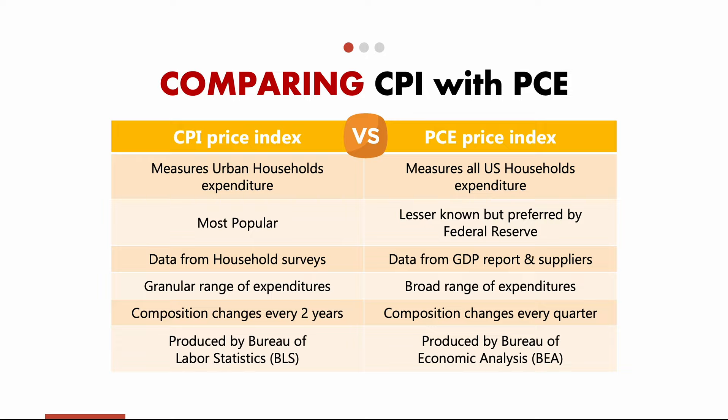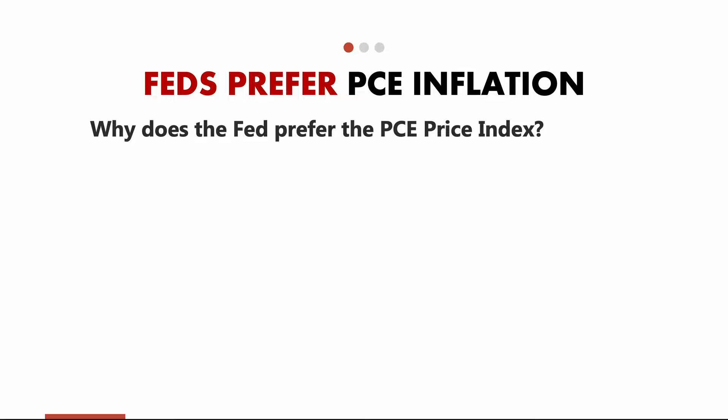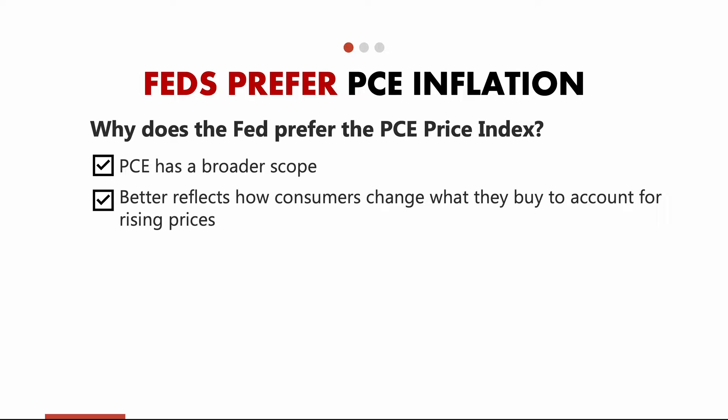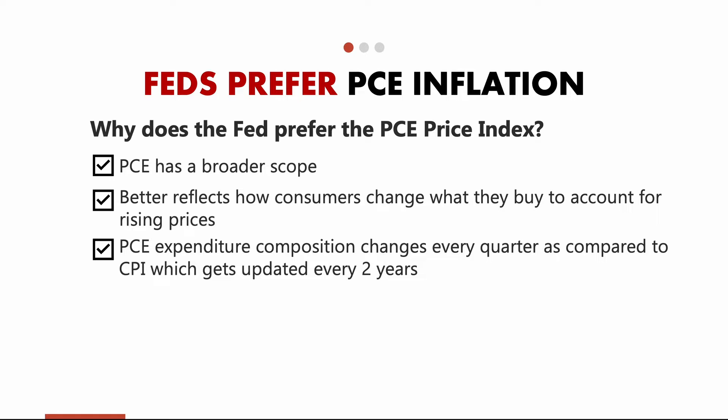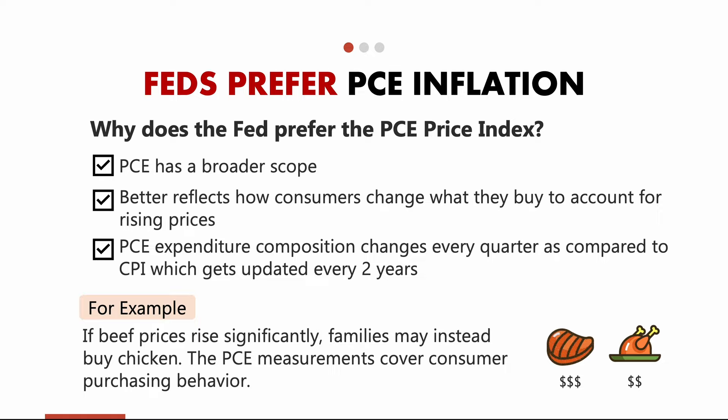Why does the Federal Reserve prefer the PCE price index? First, PCE looks from a higher perspective while CPI looks at a granular level. Second, PCE captures consumer behavior during rising prices. Third, PCE composition changes every quarter, making it more accurate with consumer purchasing behavior, while CPI updates composition every two years. For example, if consumers experience higher inflation with beef prices, they may switch to less expensive chicken — PCE captures that behavior change.